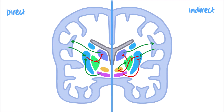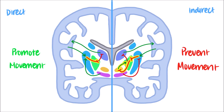If you focus on areas of the pathways that differ from one another, you can see how the direct pathway turns off the inhibition that the internal globus pallidus normally has on the thalamus. On the other hand, the projections of the indirect pathway further stimulate the GPI's inhibition of the thalamus. Because of this, the direct pathway promotes voluntary movement, and the indirect pathway prevents unwanted movements from occurring.